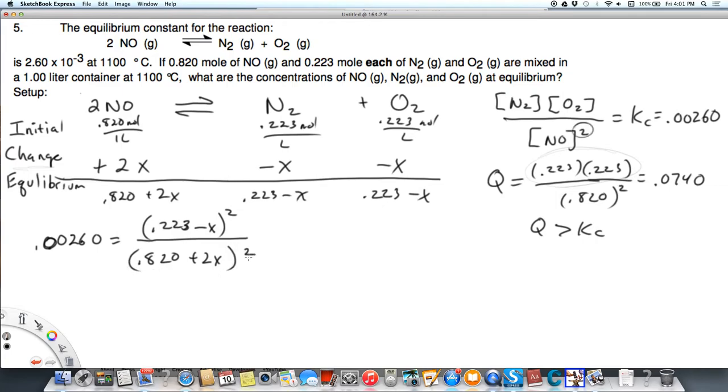and you can see I have to square that too. So that gets squared because it'd be NO squared. Okay, so now what we're going to do is take the square root of both sides.